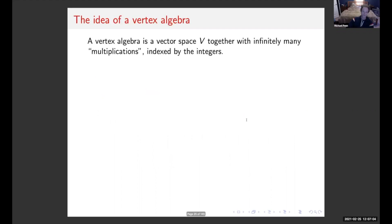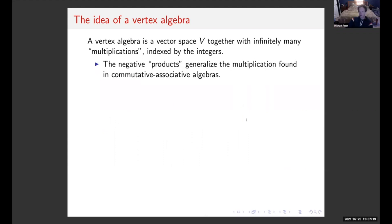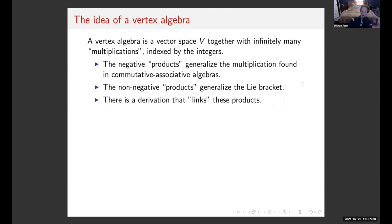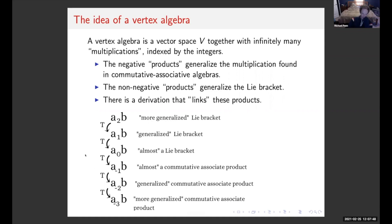Here's the idea of a vertex algebra before the careful definition. We can think of it as a vector space together with infinitely many multiplications indexed by the integers. The negative products between vectors generalize multiplication found in commutative associative algebras, whereas the non-negative products generalize Lie brackets. There's also a derivation that links these products. In my picture, A₋₁B is as close to a commutative associative product as you can get, and A₀B is almost a Lie bracket structure.